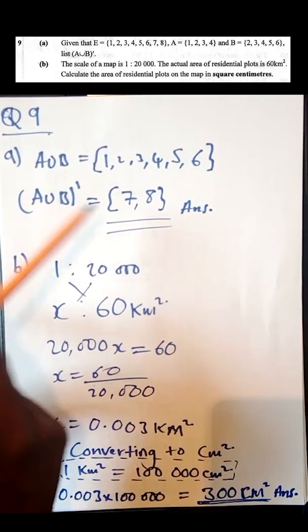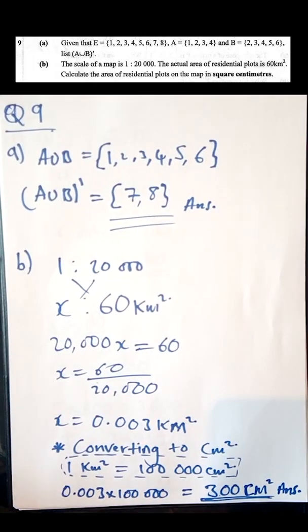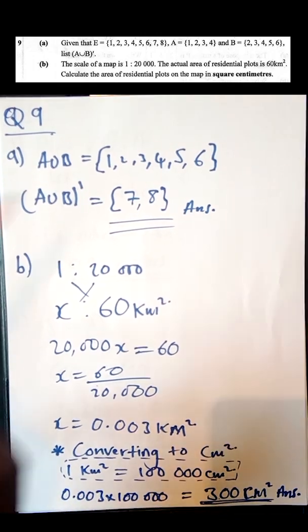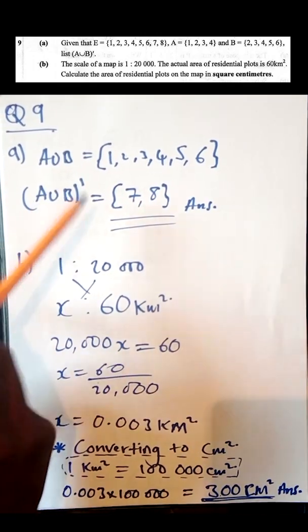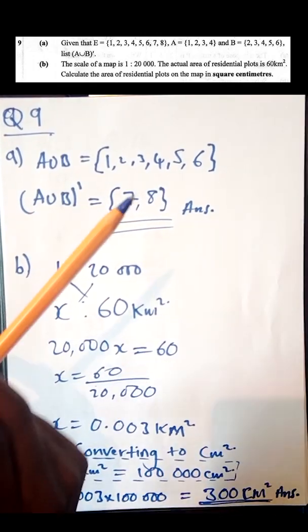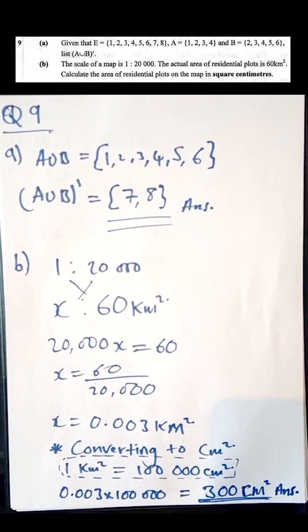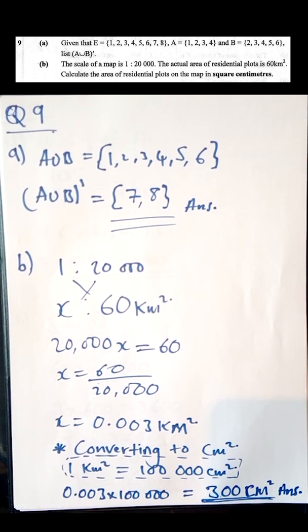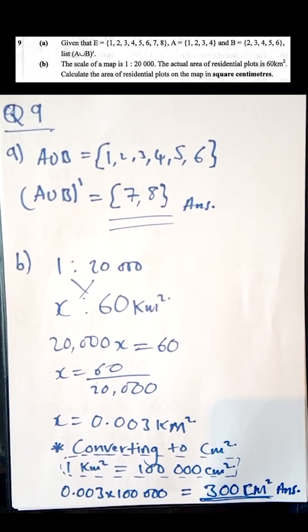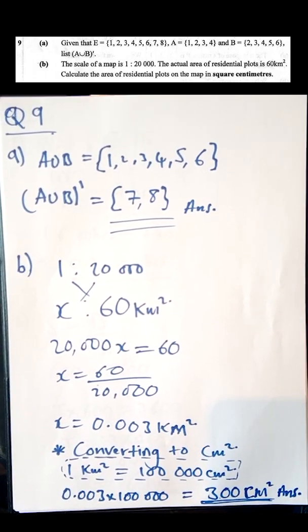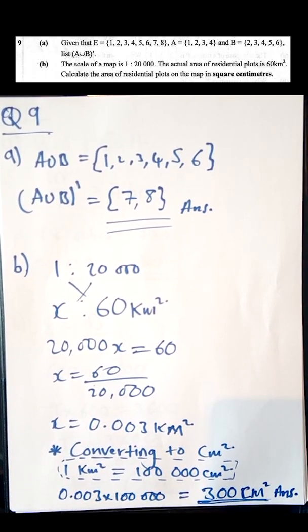What is not in A ∪ B is the complement. The only numbers missing from {1, 2, 3, 4, 5, 6} within the universal set are 7 and 8. Therefore, (A ∪ B) complement = {7, 8}. As simple as that.